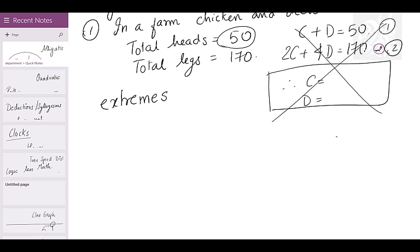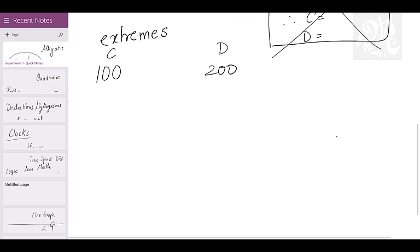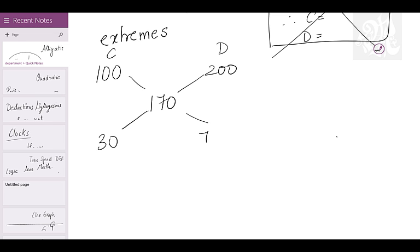Another way is using allegations. Allegation is about extremes — keep this in mind. Assume all are chicken: 50 heads give 100 legs. If all are deer, they'll have 200 legs. But we actually have 170 legs, which is the mix. So: 200 minus 170 is 30, and 170 minus 100 is 70. That gives a ratio of 30 to 70, which is 3 is to 7 — the ratio of chicken to deer.